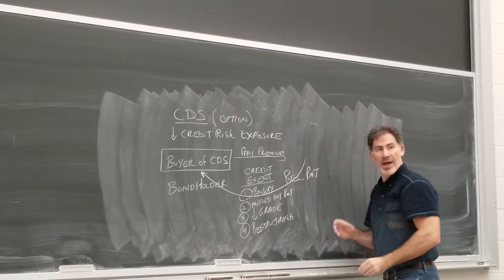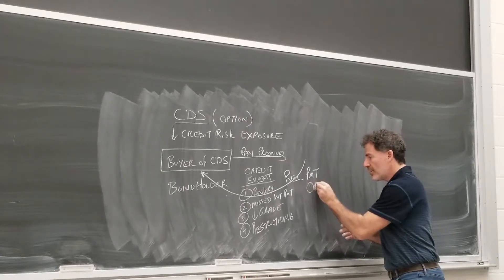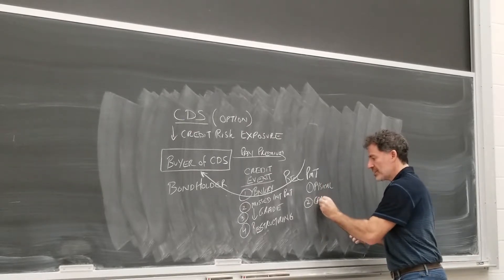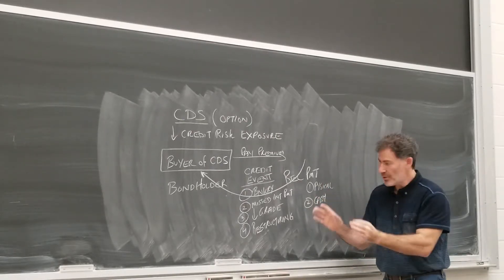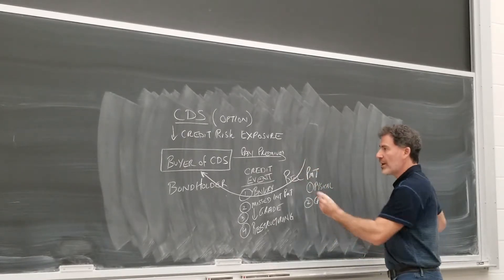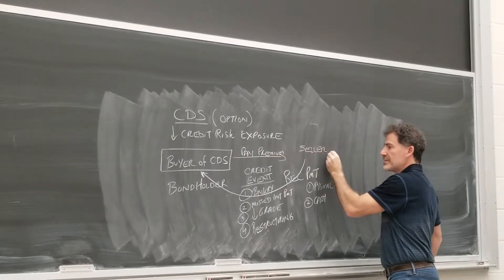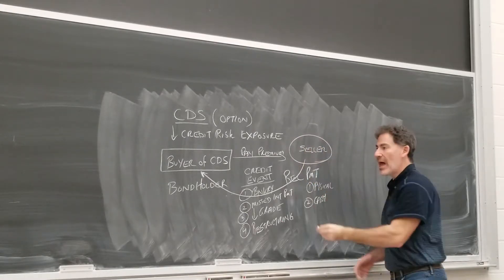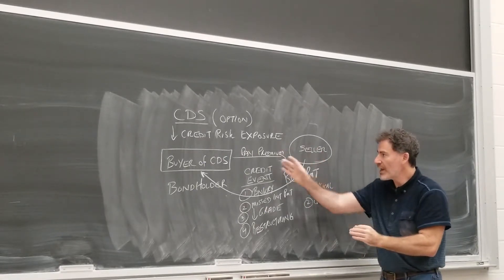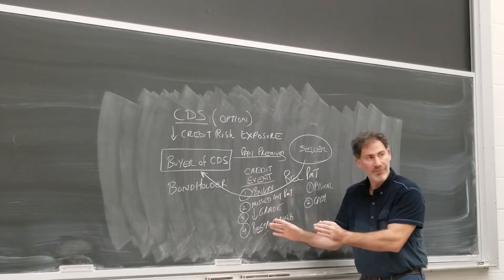And that payment or settlement could be physical, or it could be cash settlement. So let's hold on to that. Let's fill in the rest of this CDS. We've got the buyer. Over here, we have the seller of the CDS. And the seller of the CDS, this might be an insurance company or something, so they're collecting the premiums, and they will make a payment if there's a credit event.